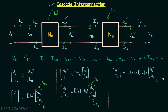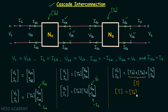This is the matrix form of the two equations for the larger network — the equations we have for T parameters. We can therefore conclude that the overall network's T parameters matrix equals the T parameters matrix of the first network multiplied by the T parameters matrix of the second network. This is the final and important result.